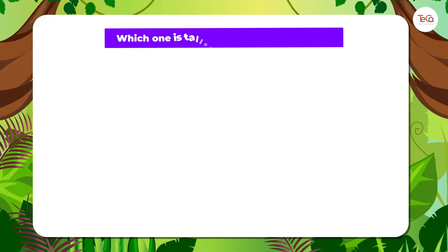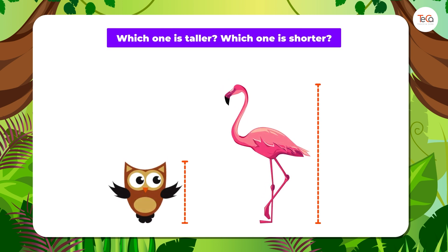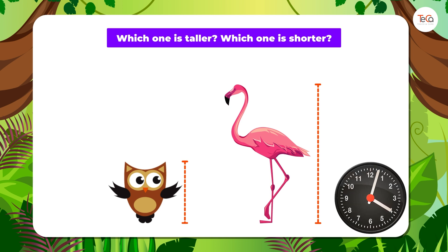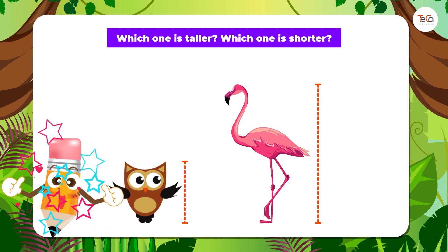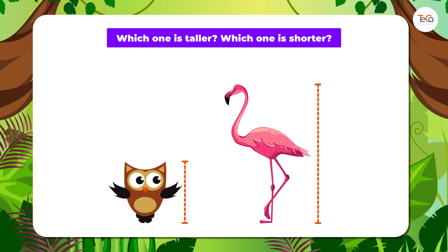Now let's practice! Tell me, which one is taller? Which one is shorter? Great! The flamingo is taller and the owl is shorter.